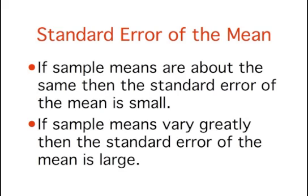The most common measure of how much sample means differ from each other is the standard error of the mean. The standard error of the mean is the standard deviation of the sampling distribution of the mean. If all the sample means were very close to the population mean and to each other, then the standard error of the mean would be small. On the other hand, if the sample means varied considerably, then the standard error of the mean would be large.